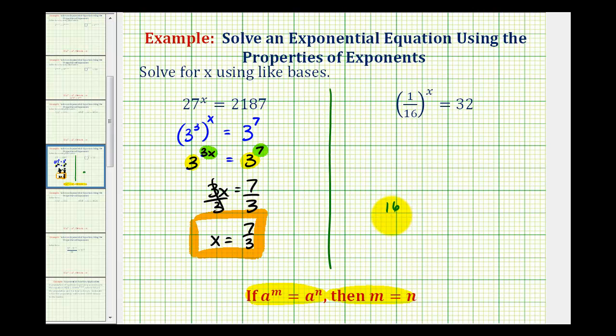Well, I know 16 is equal to 4 times 4, and 4 is equal to 2 times 2, so we could write this as 1 over 2 to the 4th raised to the power of x equals... now even though this is in fraction form, if we could write 32 with the base of 2 would be helpful. And since 32 is equal to 2 times 16...